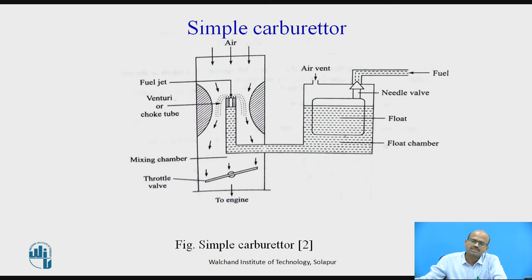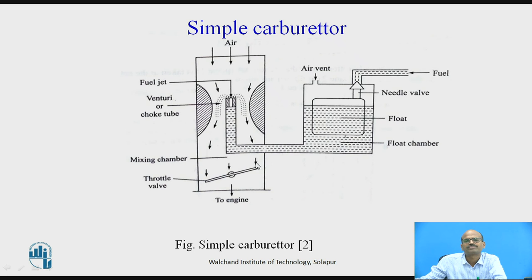There are two types: down-draught and up-draught. For up-draught, the air flows in the upward direction, bottom to top. In this schematic diagram, movement of air is in the downward direction — that is why it is called the down-draught type of carburetor. This vacuum is responsible for injection of the petrol, and the mixture formed on the downstream side is supplied to the SI engine during the suction stroke.